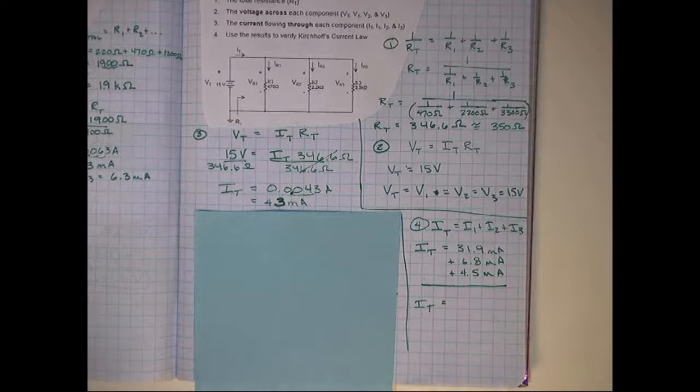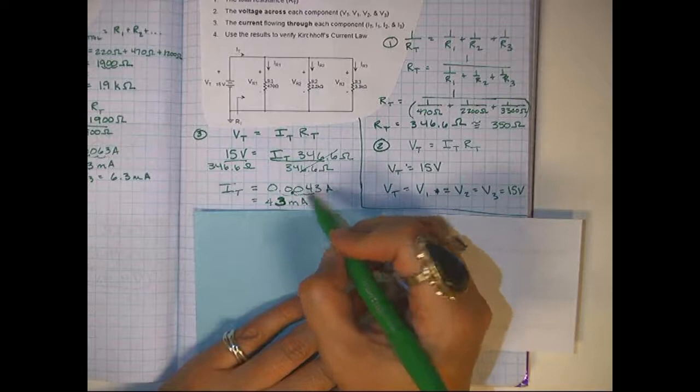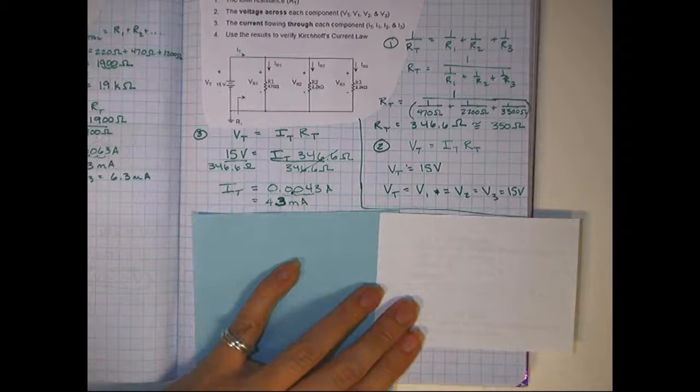Okay, and it really, I wrote it down wrong just a second ago, it should be 0.043 amps, which is 43 milliamps.